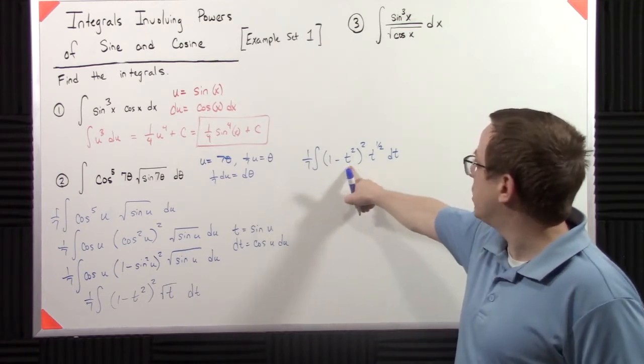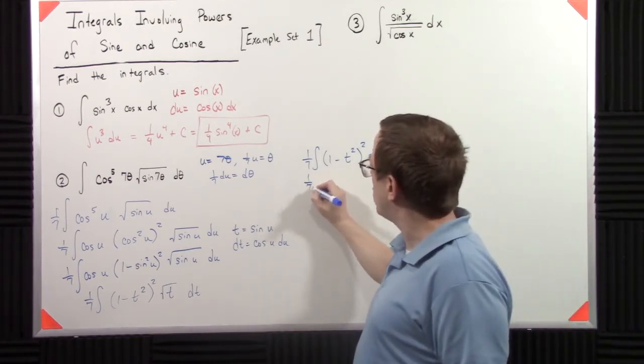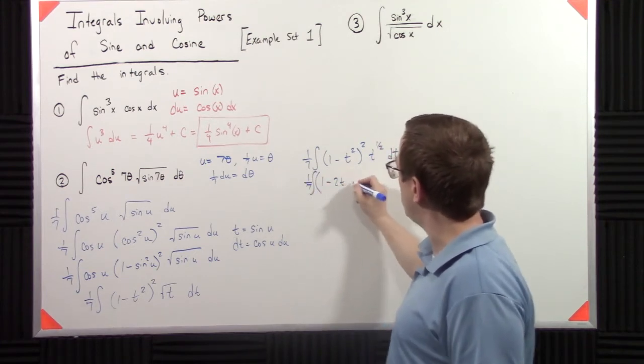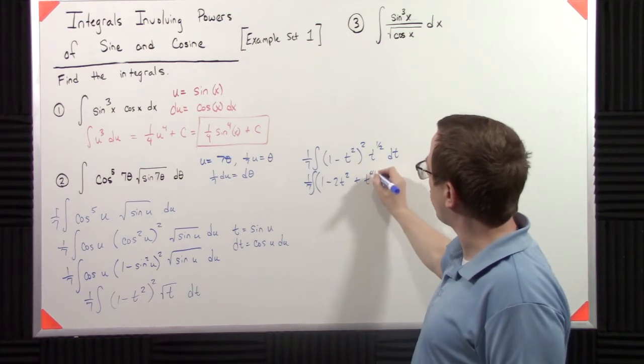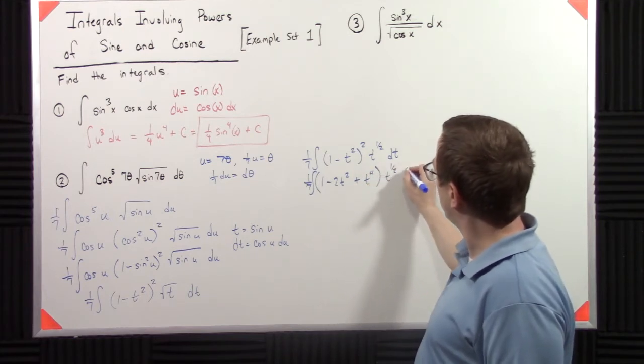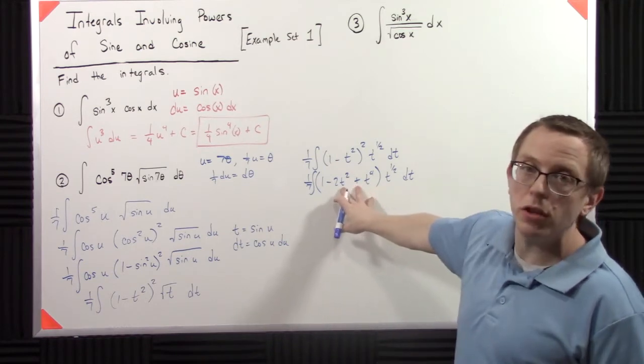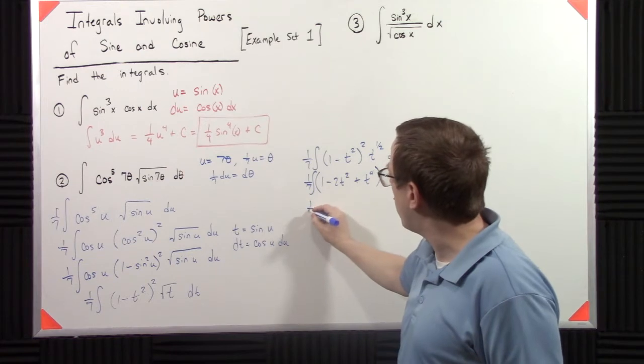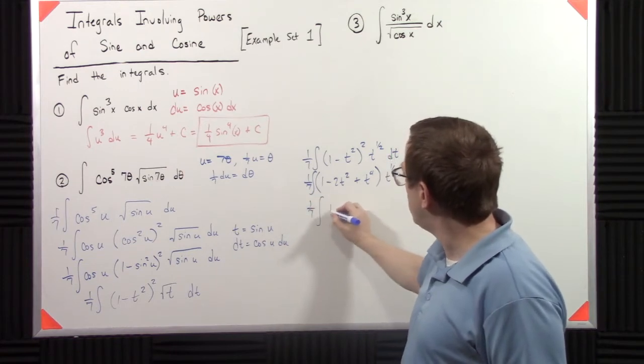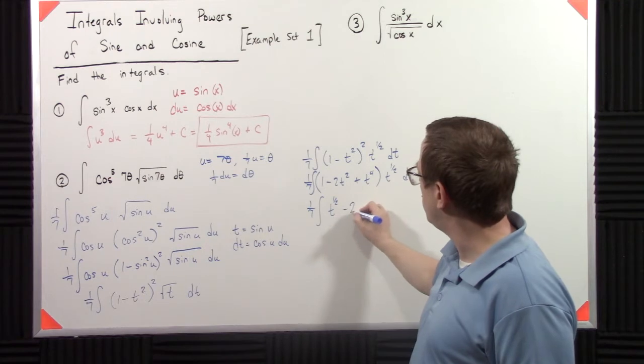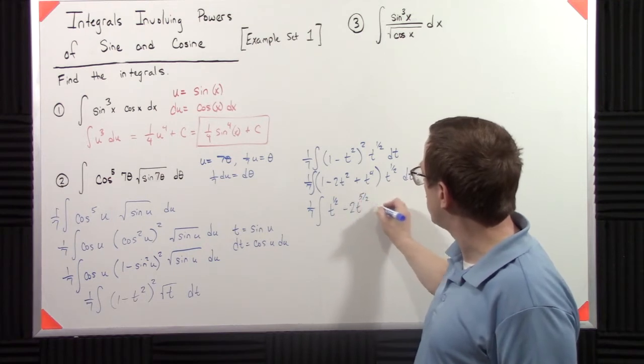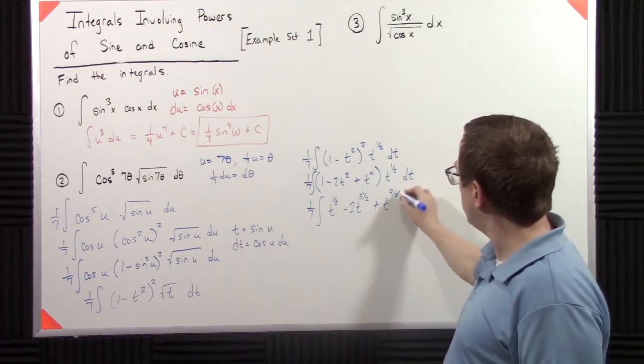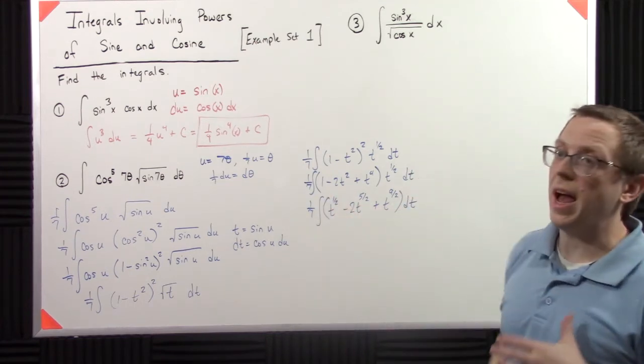Then I can multiply this whole thing out. I can say, well, one minus two t squared plus t to the fourth t to the one-half dt. So I just did the FOIL method here. And then I'm going to distribute this t to the one-half. So now that I have t to the one-half minus two t to the five-halves plus t to the nine-halves dt.